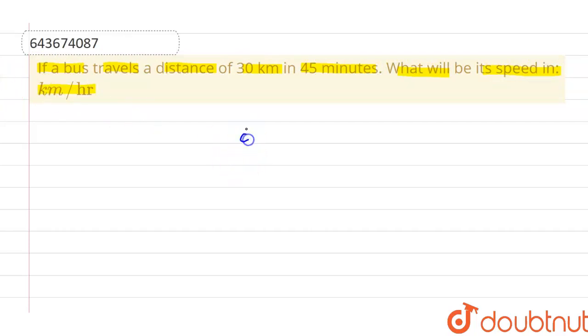So what is the given distance? The bus covers a distance of 30 kilometers. And the time to travel this particular distance is given as 45 minutes. So we have to find out the speed. Speed is not known to us.